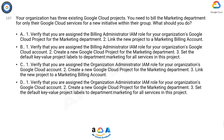3) Set the default key-value project labels to department:marketing for all services in this project. Option C: 1) Verify that you are assigned the Organization Administrator IAM role for your organization's Google Cloud account. 2) Create a new Google Cloud project for the marketing department. 3) Link the new project to a marketing billing account. Option D: 1) Verify that you are assigned the Organization Administrator IAM role. 2) Create a new Google Cloud project for the marketing department. 3) Set the default key-value project labels to department:marketing for all services in this project.